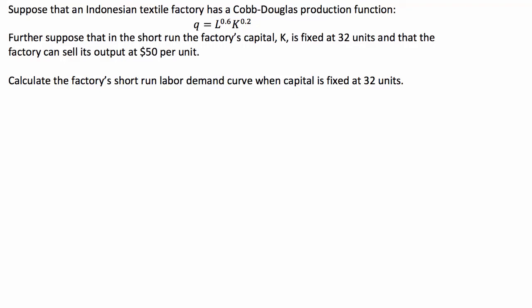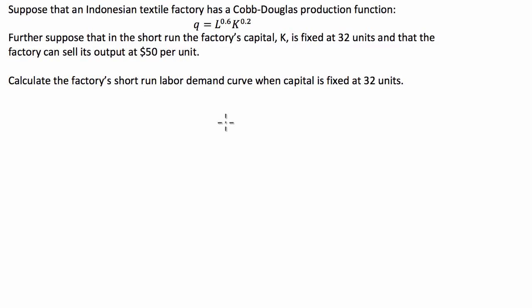G'day guys, we've got a microeconomics question for you today where we're asked to find the short-run labour demand curve for an Indonesian textile factory. This factory has a Cobb-Douglas production function Q = L^0.6 × K^0.2, where L and K are the factor inputs of labour and capital respectively. We're also told that in the short term capital inputs are fixed at 32 units and the factory can sell its output at $50 per unit.